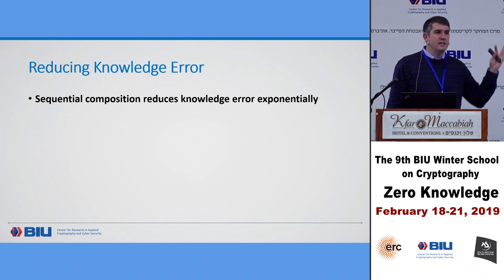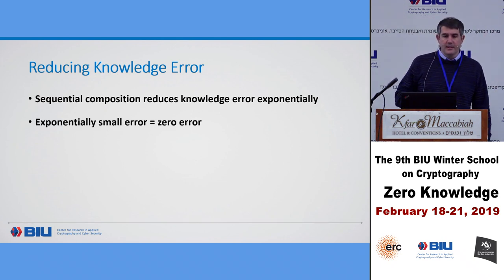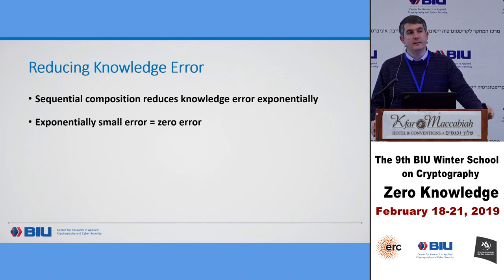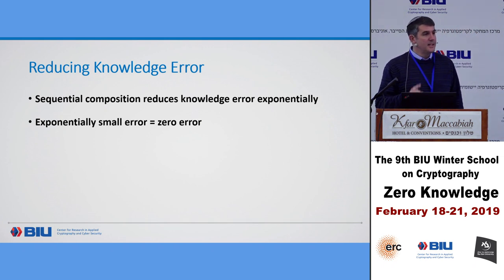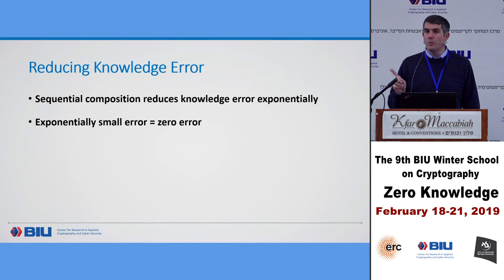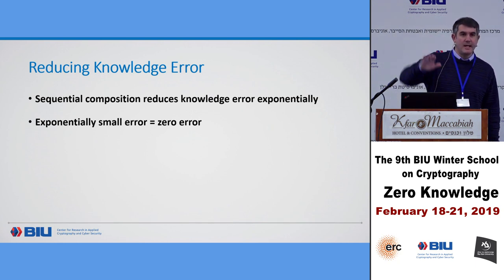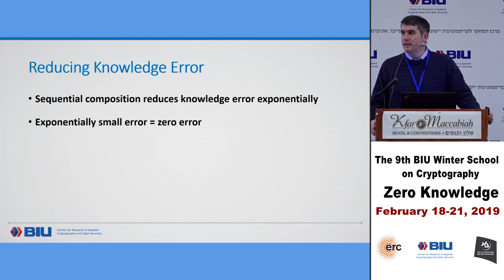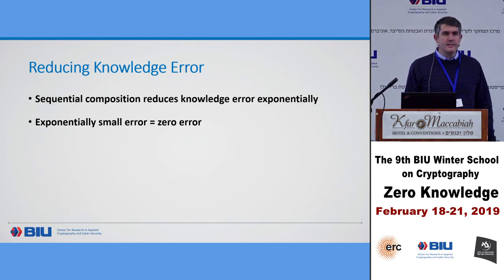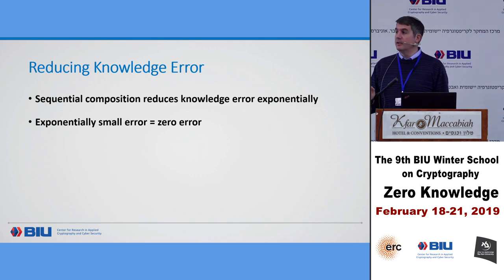An interesting thing that happens in knowledge soundness but not in regular zero knowledge: if I have an exponentially small error — meaning 2-to-the-minus-n, not just any negligible function — I can actually reduce that to zero error. This doesn't work with just negligible functions or n-to-the-minus-log-n. If I have exponentially small knowledge error, I can replace it with complete zero error — and you can't do that in zero knowledge proofs.